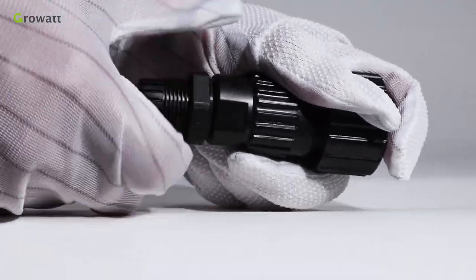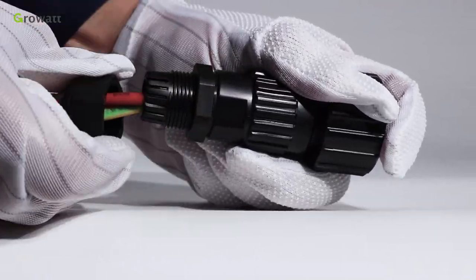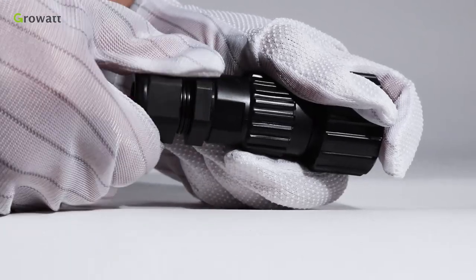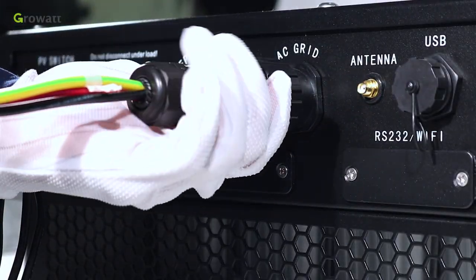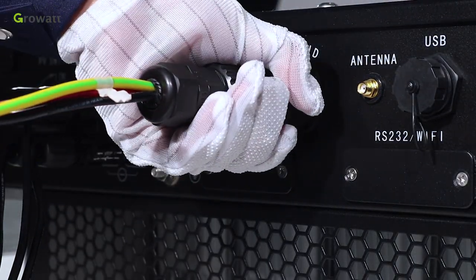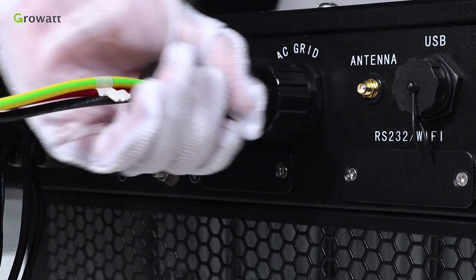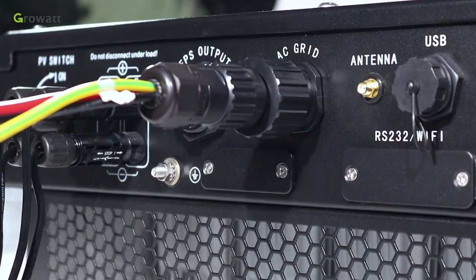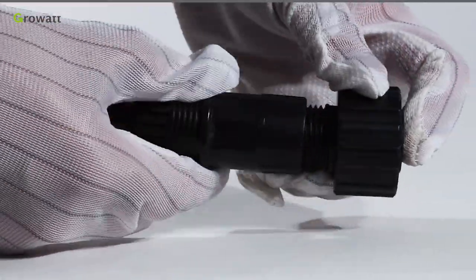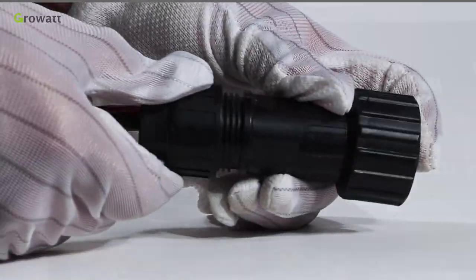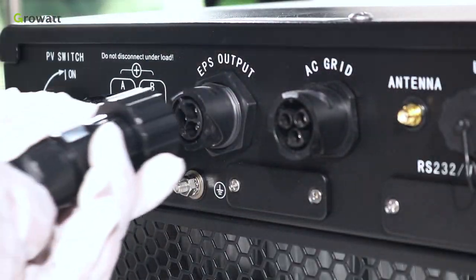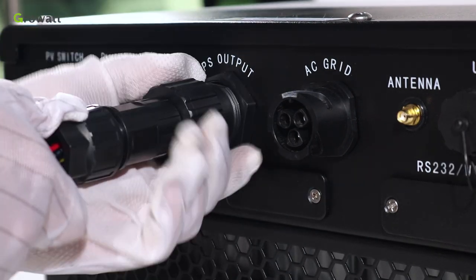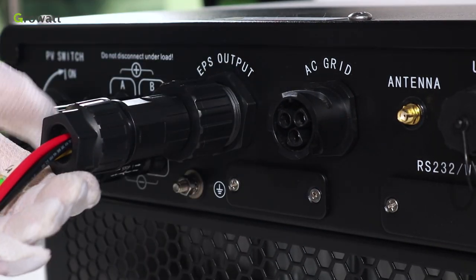Push and rotate the threaded sleeve onto connection terminal until both are locked tightly. Plug the socket into AC output terminal, clockwise rotation to tighten the socket, counterclockwise rotation to loosen the socket. The EPS terminal connection is the same as the on-grid terminal installation. Tighten the threaded sleeve into the off-grid connection terminal and plug the socket into EPS outlet terminal.